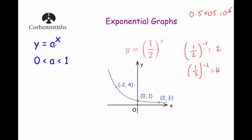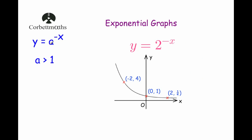Now what happens whenever we have y equals a to the power of negative x? If we have the graph y equals 2 to the power of negative x, where a is bigger than 1, well 2 to the power of negative 0 is 1, so it still crosses the y-axis at 1. Whenever we have positive values for x, it will automatically make them negative — if x equals 1, we get 2 to the negative 1. So what was on the left-hand side will go to the right-hand side, and vice versa — the graph will just be a reflection in the y-axis.